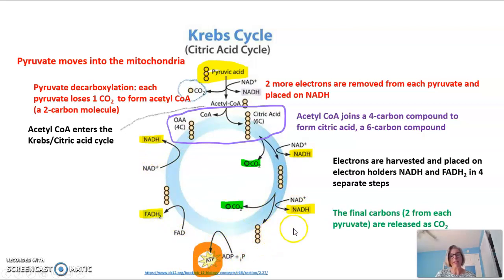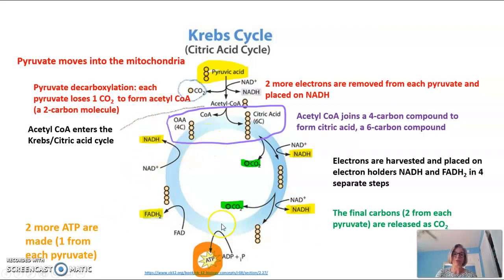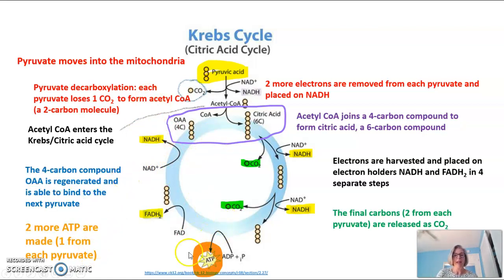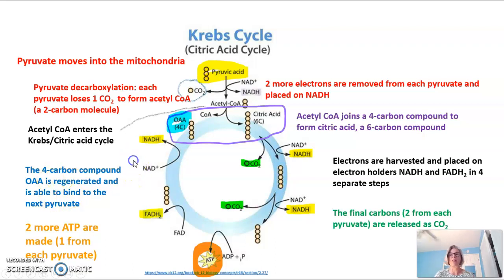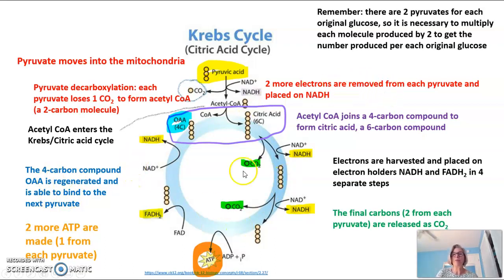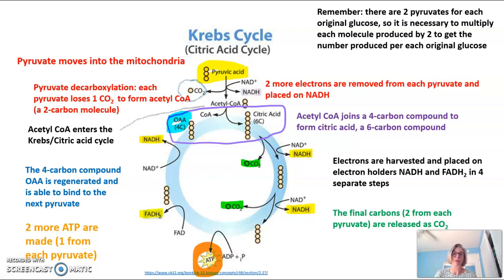There is also one step where ATP is made in the Krebs cycle. For every original glucose there are two pyruvates, which means there are two more ATPs made for each pyruvate. The final part of this cycle regenerates the four-carbon compound OAA, which will pick up the next acetyl-CoA coming in from the next glucose going through glycolysis. Remember: there are two pyruvates for every original glucose, so everything produced here must be multiplied by two to get the total for the original glucose.